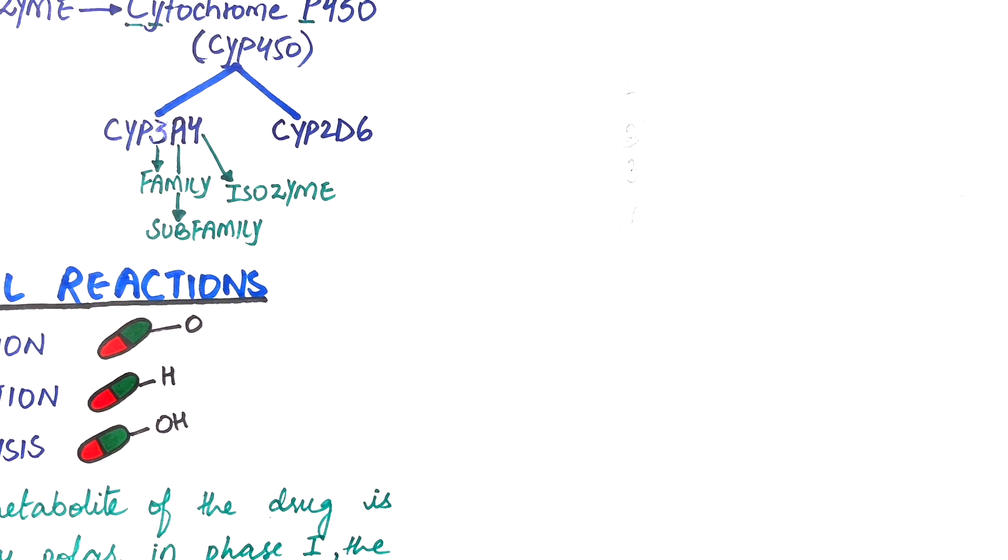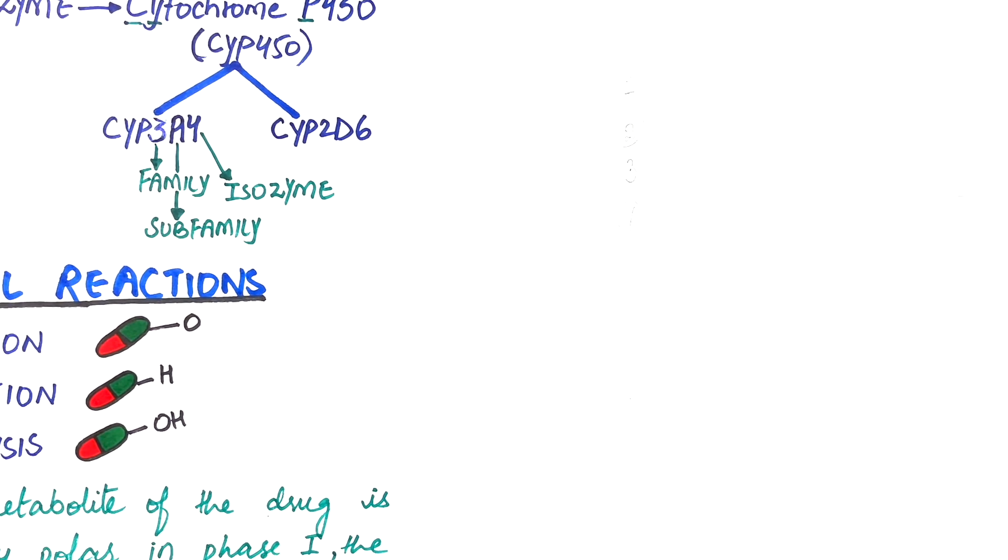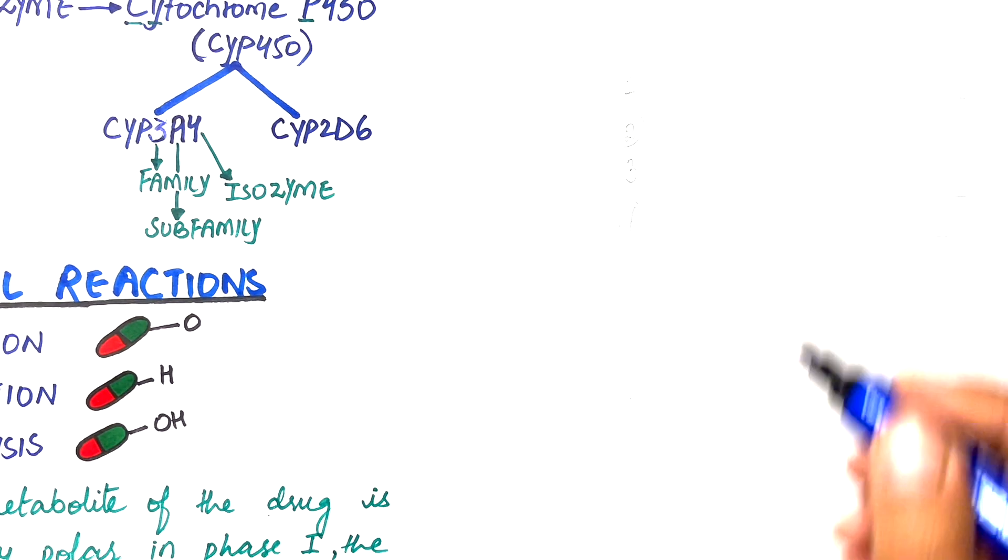In phase 2 metabolism, conjugation reactions take place in order to further convert the drug into a more polar form.